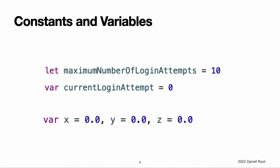Declaring constants and variables. Constants and variables must be declared before they are used. You declare constants with the let keyword and variables with the var keyword. Here's an example of how constants and variables can be used to track the number of login attempts a user has made. This code declares a new constant called maximum number of login attempts and gives it a value of 10, then declares a new variable called current login attempt and gives it an initial value of 0. The maximum number of allowed login attempts is declared as a constant because the maximum value never changes. The current login attempt counter is declared as a variable because this value must be incremented after each failed login attempt.